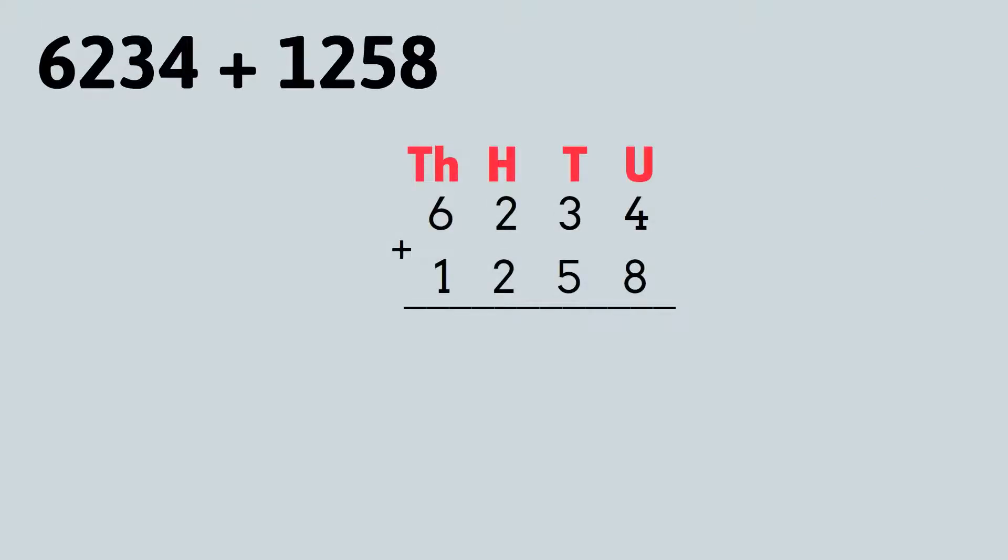Four add eight equals twelve, so we write down twelve. Oops, we don't write down twelve. We split twelve into tens and units, then we write down the units and carry over the tens. So let's do that. Twelve equals one ten and two units, so we'll carry over one ten and write down two units.